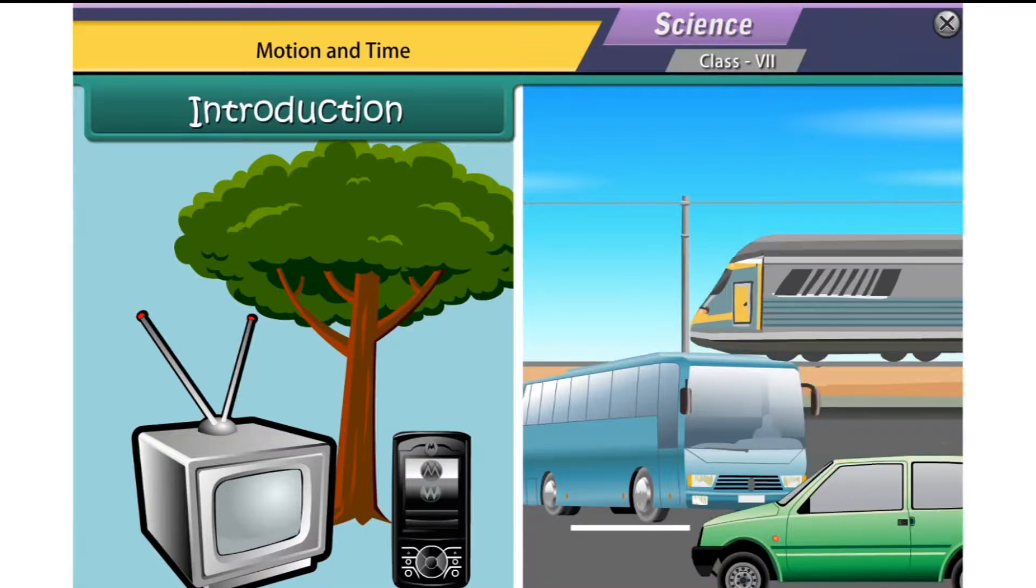Objects such as television, mobile, trees, etc. are static. In other words, their position does not change with time.